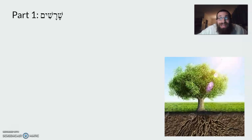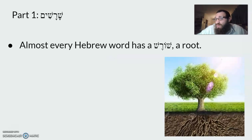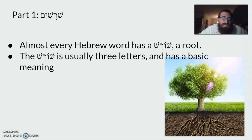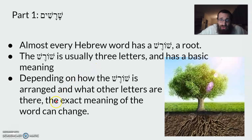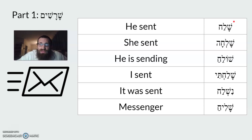Any word that has a shoresh has something to do with the meaning of that shoresh, and different ways that it's conjugated — meaning it's built up and broken apart — will change the details of that meaning. Almost every word has a shoresh, usually three letters, with some basic meaning. For example, shin-lamed-chet means 'to send,' shin-mem-ayin has 'shema' — hearing — and bet-nun-hey is 'building.' Depending on how the shoresh is arranged and what the other letters and vowels are, the specific meaning changes.